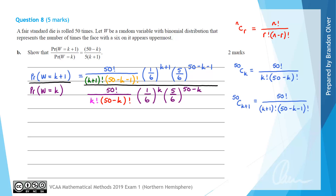I've color-coded terms so we can track where everything ends up. We still have 50 factorial in blue. Instead of dividing a fraction by a fraction, we multiply by the reciprocal. Dealing with the factorial part first: K factorial comes up to the top line, and (50 minus K) factorial also comes to the top line. We can rewrite (50 minus K) factorial as (50 minus K) times (50 minus K minus 1) factorial, using the property of factorials.